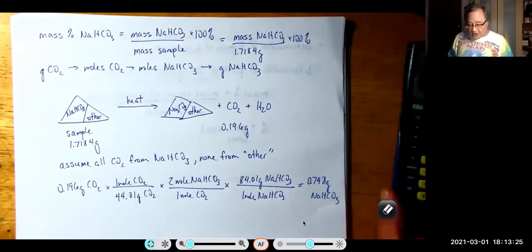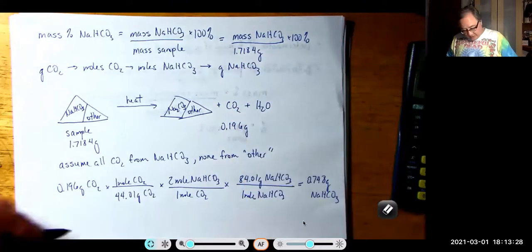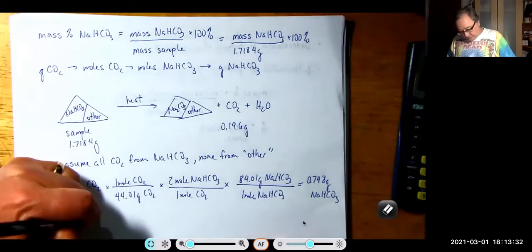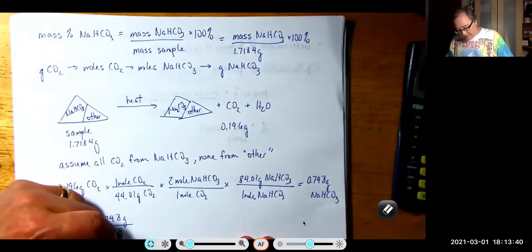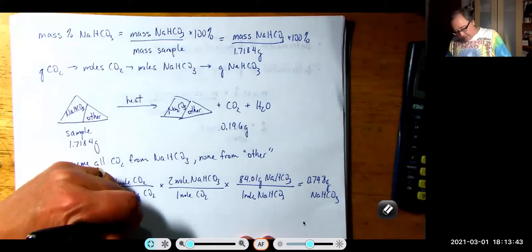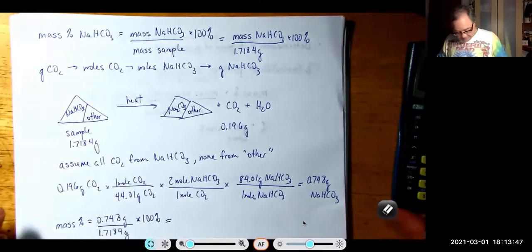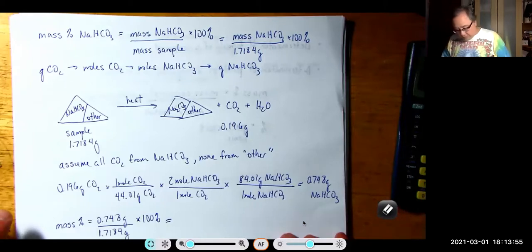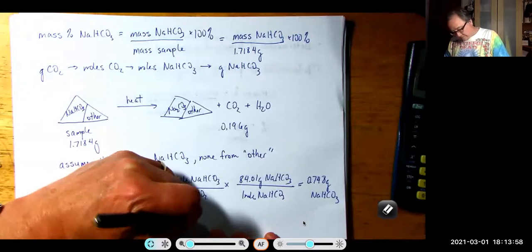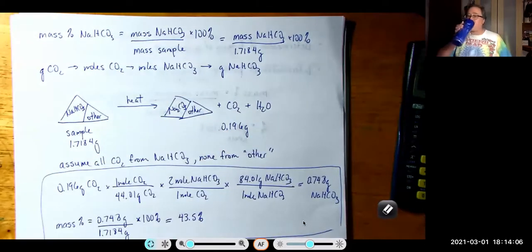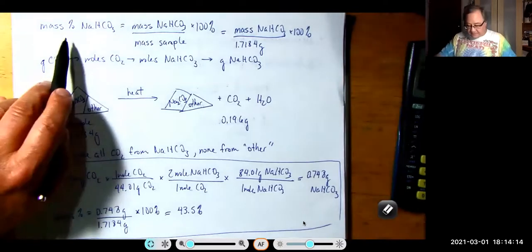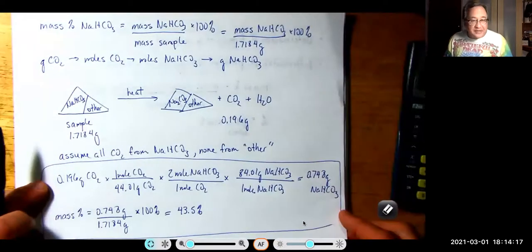Now, are we done? No. We have to use our mass percent formula. The mass percent equals 0.748 grams of sodium bicarbonate divided by 1.7184 grams of sample times 100%, which gives us 43.5%. This is the kind of work I would expect to see for this problem. Remember, it started with the question — what is the mass percent? So we wrote that formula out.